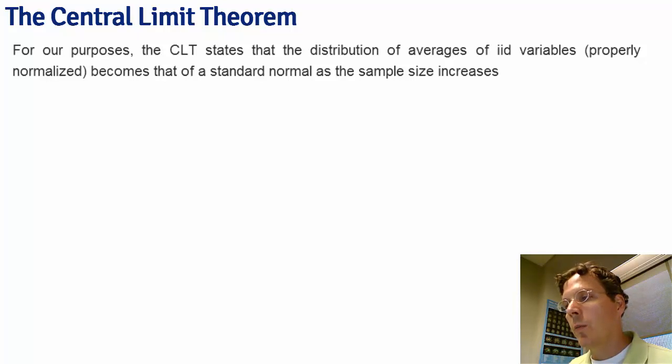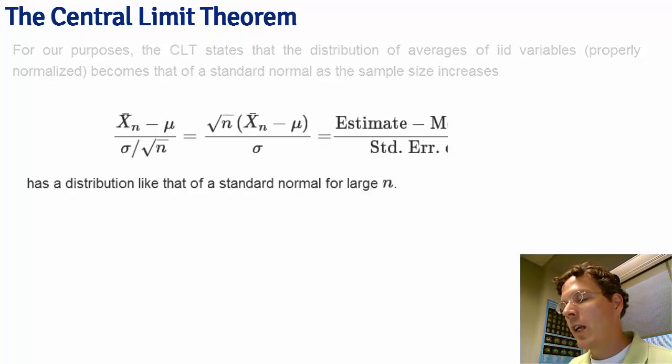Because it has fairly loose requirements on the collection of populations that it applies to, the central limit theorem applies in a nearly endless variety of settings, and we'll go through several. The basic result is that if we take an estimate like the sample average x-bar, subtract off its population mean mu, and divide by its standard error sigma over square root n, that random variable limits to that of a standard normal.